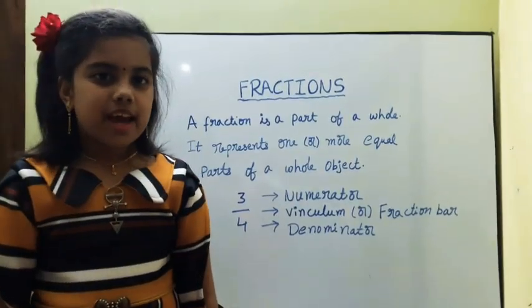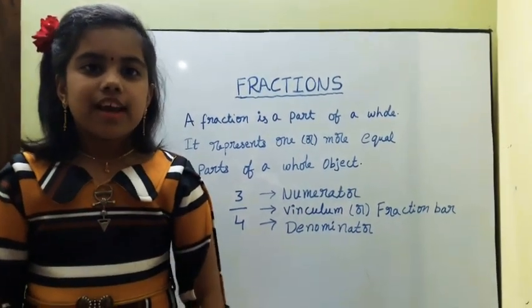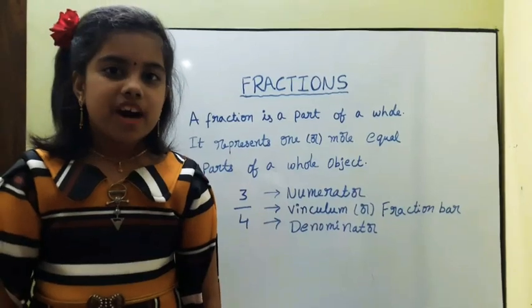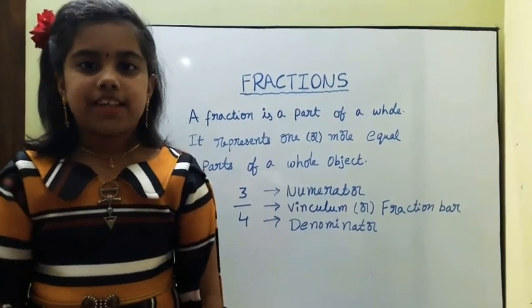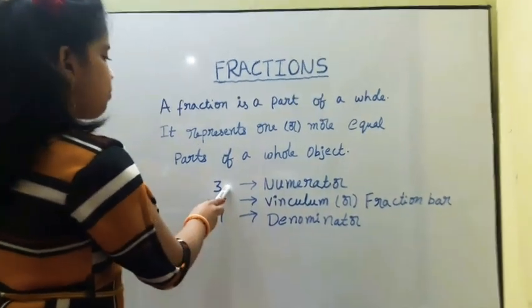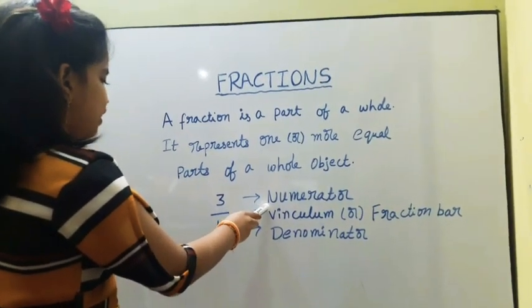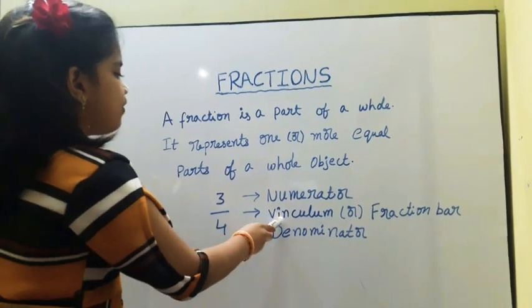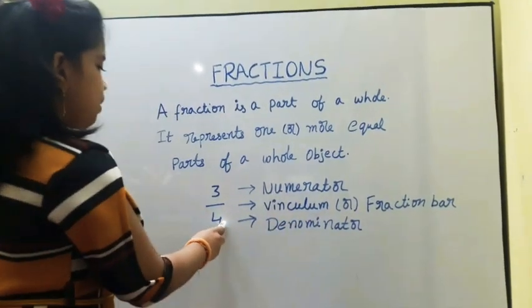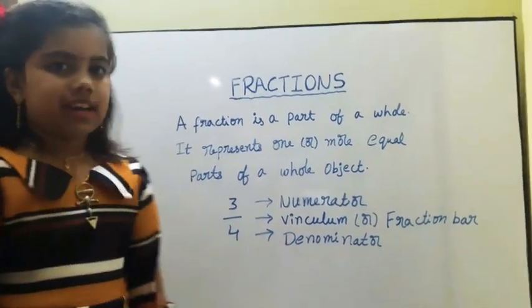First, a fraction is a part of a whole. It represents one or more equal parts of a whole object. Look at the fraction 3 by 4. The number above the line is called the numerator. The line is called vinculum or fraction bar.